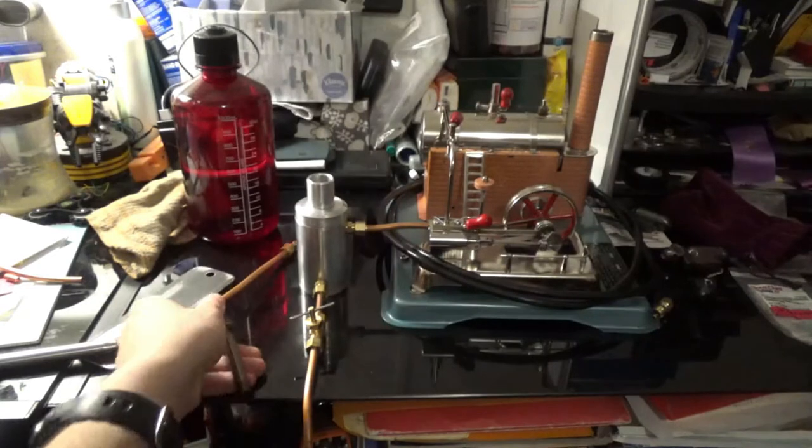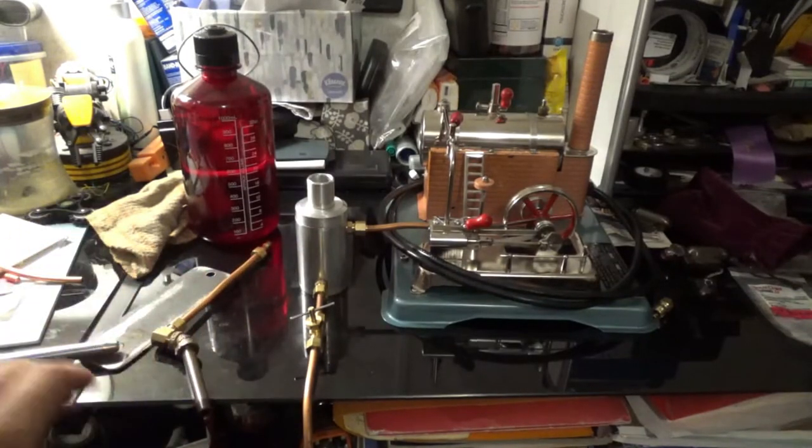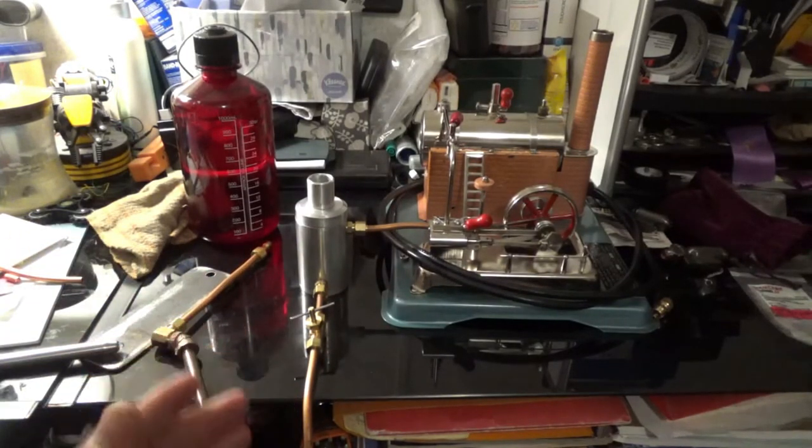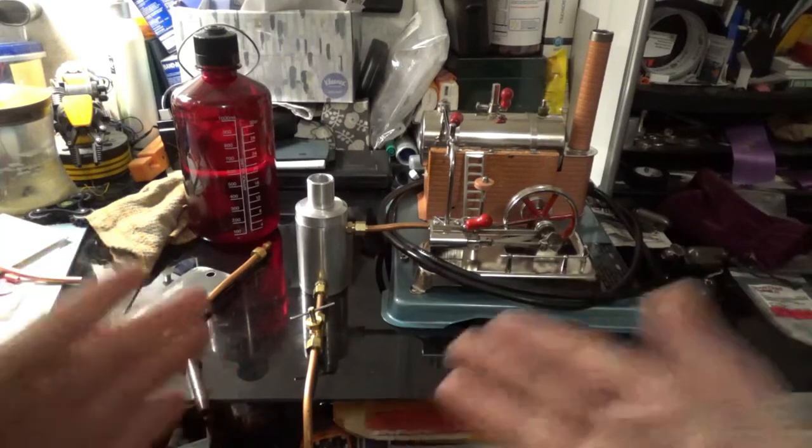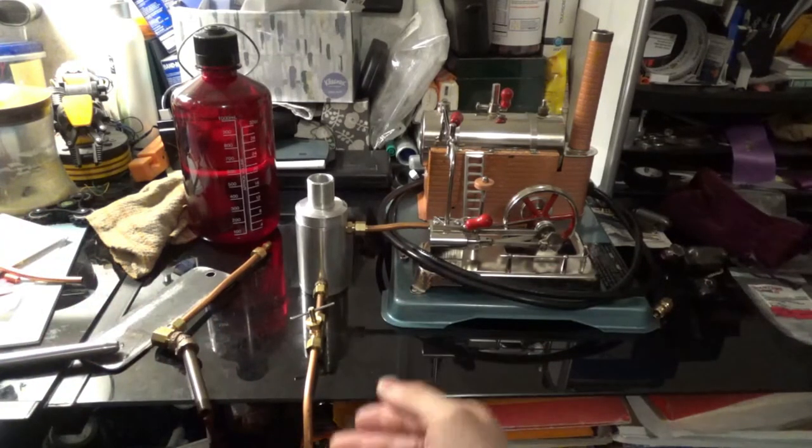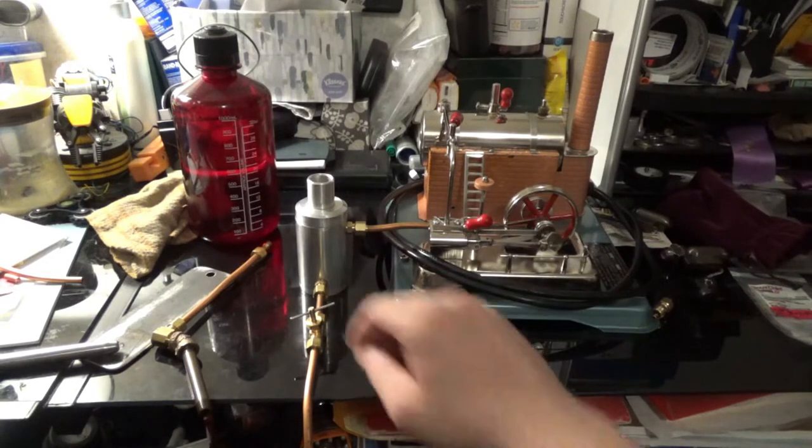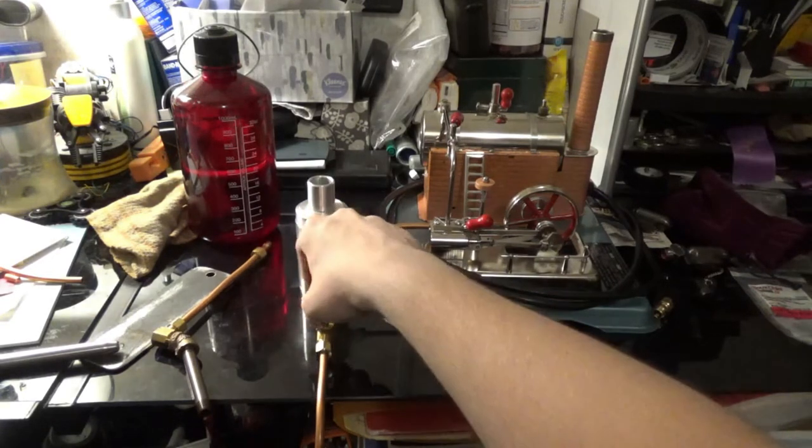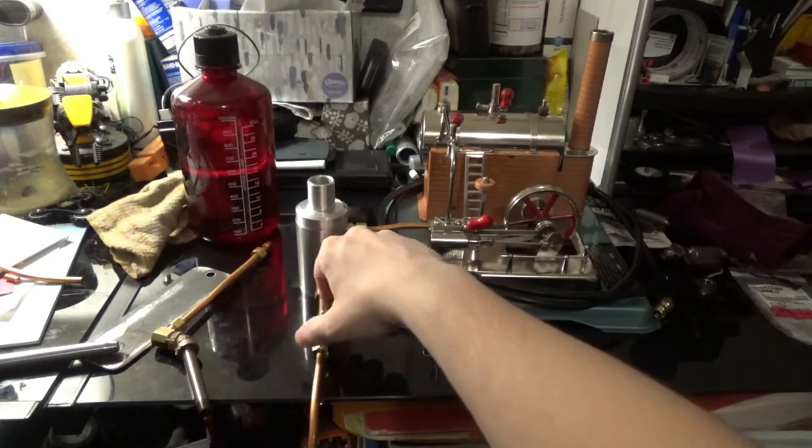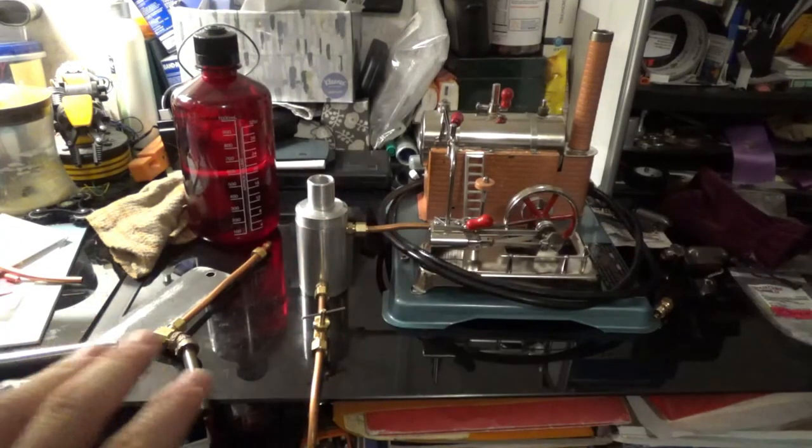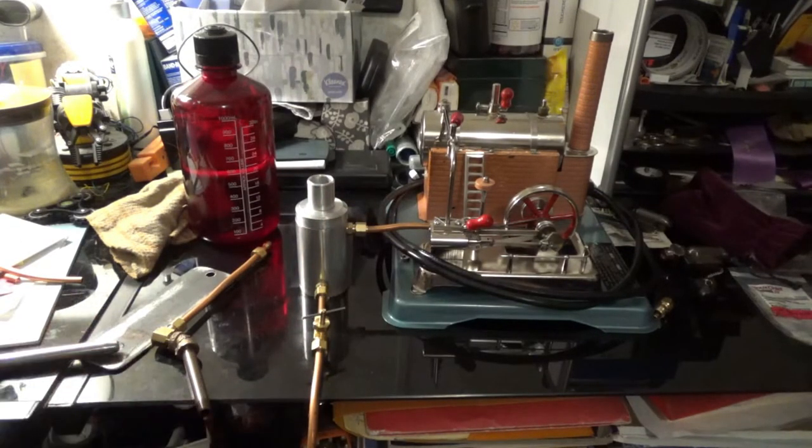The reason why I have two different pipes is I have two different setups, one for right here for running and another for the show. Because I don't really want to dump hot condensate close to people where that can be an issue. So I can just crack this to whatever flow rate I want and leave it and I don't have to worry about it.